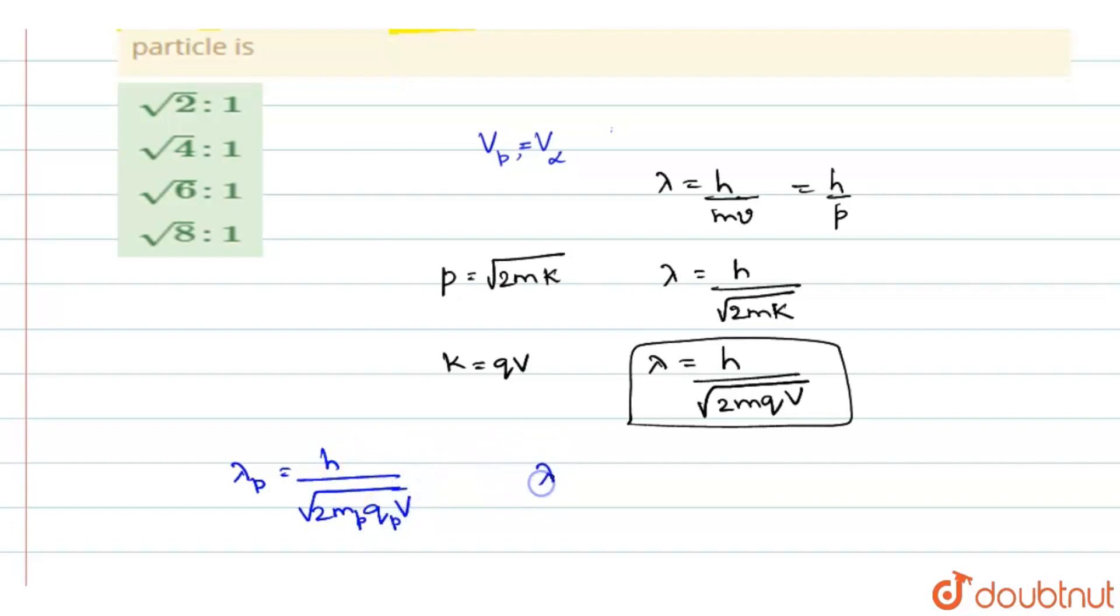Same way when you are writing for alpha particle, lambda alpha is equal to h by root 2m alpha q alpha V. They are maintained at the same potential difference, so we shall write it as V only.